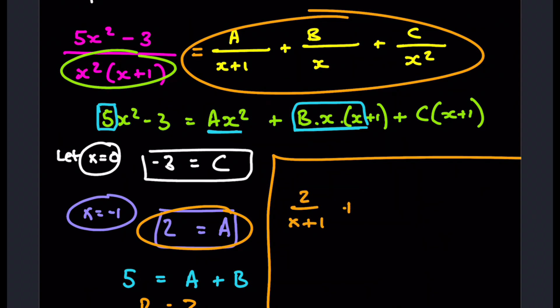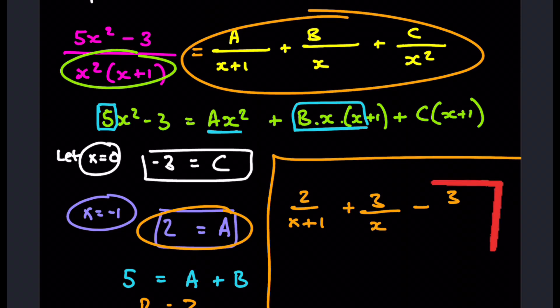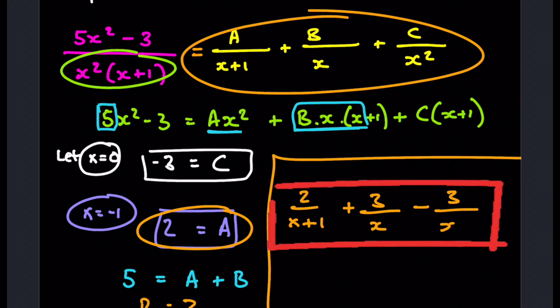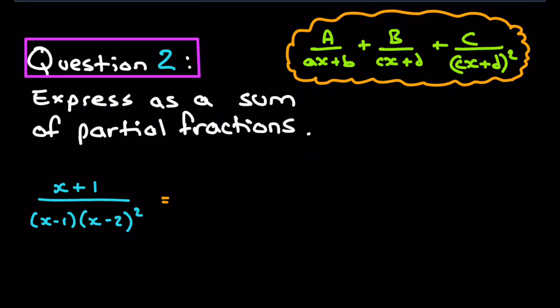So the final expression for Question 1 is: 2/(x + 1) + 3/x − 3/x².